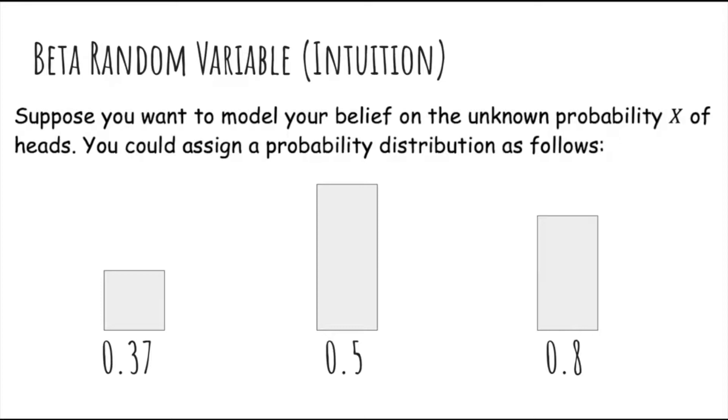You could have a probability distribution over your belief in the probability of heads. For example, here you might think that it's most likely that the probability is 0.5, somewhat likely that it's 0.8, and less likely that the probability of heads is 0.37.